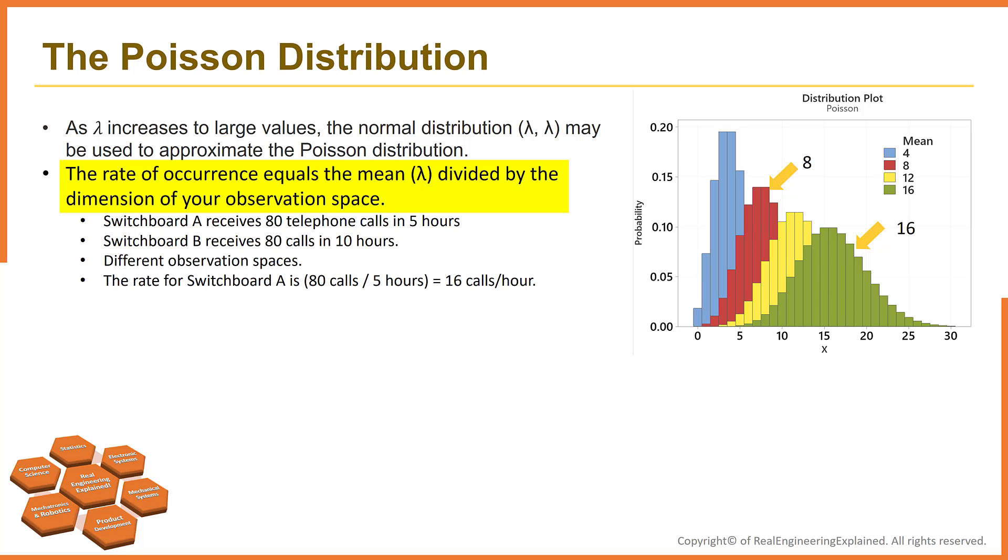You must calculate the occurrence rate to compare these counts. The rate for switchboard A is 80 calls divided by 5 hours. It's 16 calls per hour. The rate for switchboard B is 80 calls in 10 hours. So, 8 calls per hour.